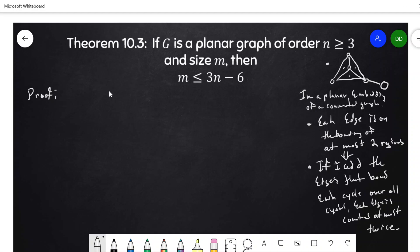One is if n is, it holds for n equal to three because automatically m is less than or equal to three. 3 choose 2 is 3. That's the size of the complete graph on three vertices. So automatically this will hold.